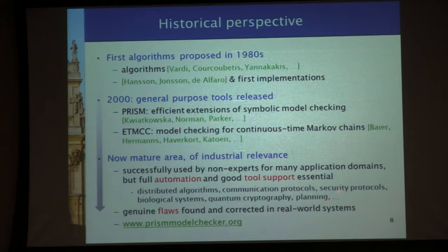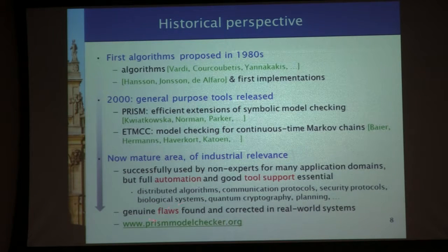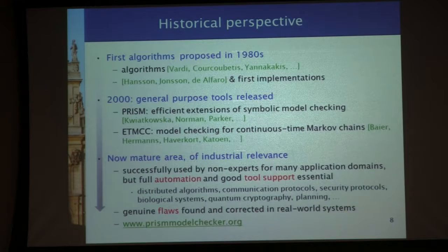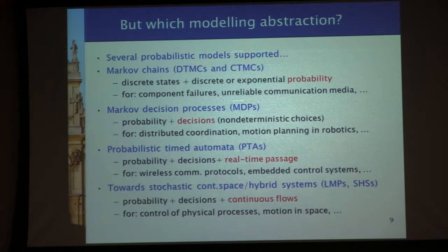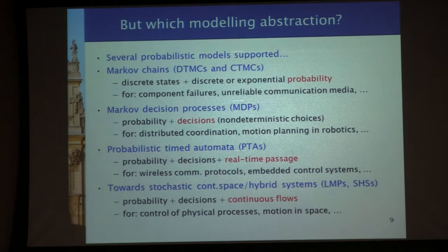It wasn't until 2000 that general-purpose tools were released. I mention just two: PRISM and ETMCC, which has now changed its name to MRMC. Now it is a mature area of industrial relevance, partly because of the success of these tools in showing you can use them to find real flaws in applications. For example, Vitali Spazico found a flaw in anonymity for the onion routing protocol using PRISM. These flaws have been found and corrected.